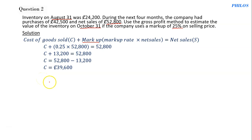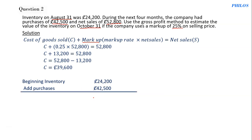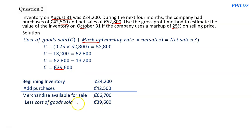After getting the cost of goods sold, we find the ending inventory. First, write the beginning inventory of 24,200, then add purchases of 42,500. Together they give 66,700, which is the merchandise available for sale. Then subtract the cost of goods sold of 39,600, and we get 27,100.